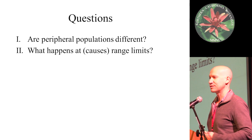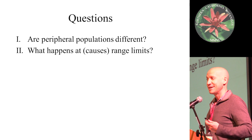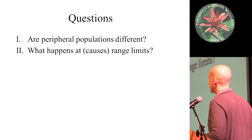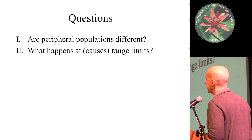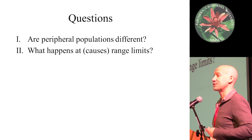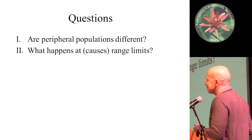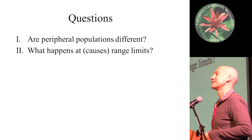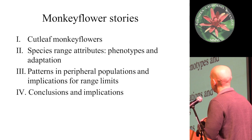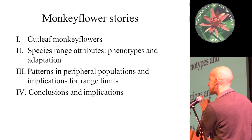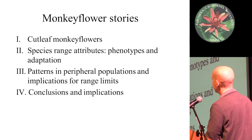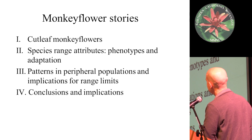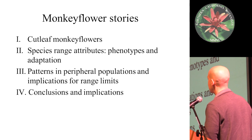The second question — what causes a species range limit — is much more difficult to answer. Studying monkey flowers for over ten years, I could probably spend the rest of my life on one species trying to answer what causes its range limits. As things change rapidly with human effects, more and more the answer for a lot of species is going to be that human causes are affecting their range limits. Today I'm going to be weaving around several monkey flower stories — the cutleaf monkey flowers in particular — talking about species range attributes, phenotypes, and adaptation.